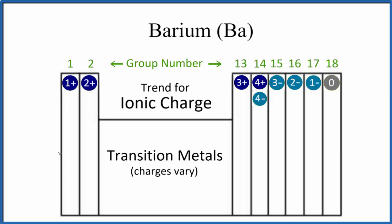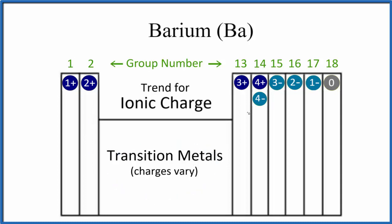We can use this general trend on the periodic table to figure that out. Elements in group 1 form ions that are 1+, meaning they lose one electron when they form their ions. Group 2 is 2+. Skip the transition metals — their charges can vary. Then 3+, and so on.